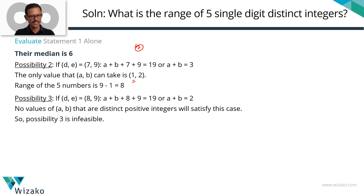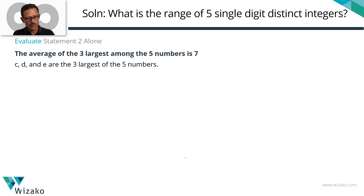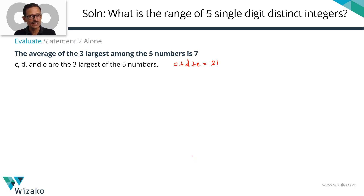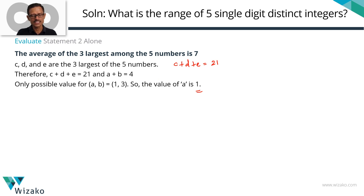Exploring the possible values for c, d, e: if c = 4, then d and e are 8 and 9; if c = 5, then d and e are 7 and 9; if c = 6, then d and e are 7 and 8. So there are three possible combinations. Since a = 1 is uniquely determined, we check the range for each: with c = 6, d = 7, e = 8, the range is 8 − 1 = 7; with c = 5, d = 7, e = 9, the range is 9 − 1 = 8.